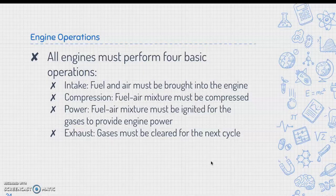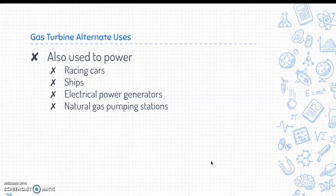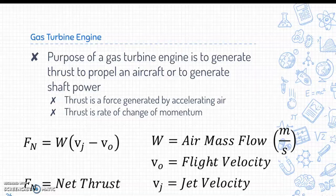All engines must perform four basic operations: intake (where fuel and air are brought into the engine), compression (where the fuel and air mixture is squeezed together), power (where the mixture is ignited for gases to provide engine power), and exhaust (where gases are cleared before the next cycle). Gas turbine engines also have alternative uses — powering racing cars, ships, electric power generators, and natural gas pumping stations. The purpose of a gas turbine is to generate thrust to propel an aircraft or generate shaft power. Thrust is a force generated by accelerating air and is the rate of change of momentum.